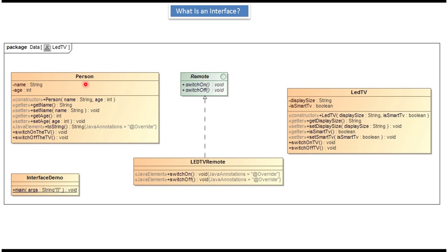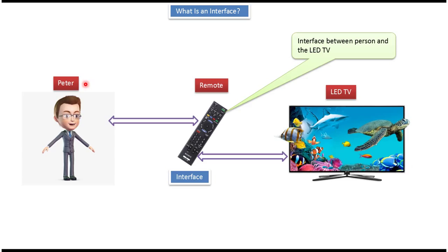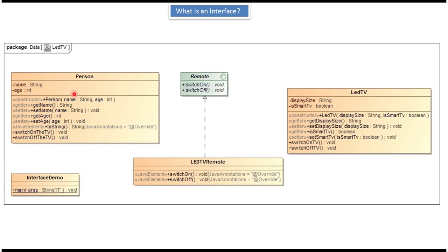Here I have defined a Person class to represent person Peter. It has two properties: name and age, and I have defined getter and setter methods for these two properties. It has two methods: switch on the TV and switch off the TV. Using the Person constructor we can create a Person object.